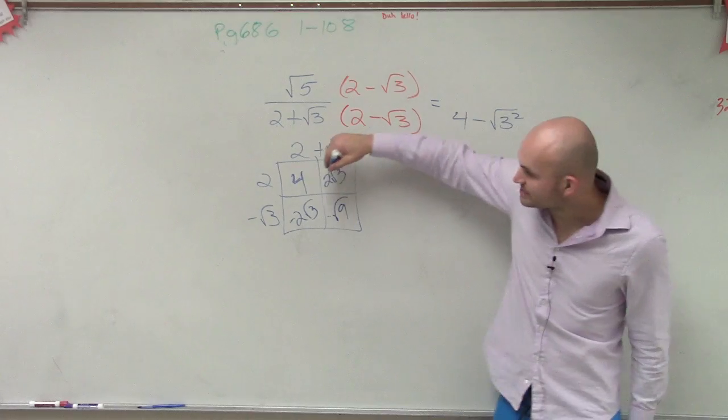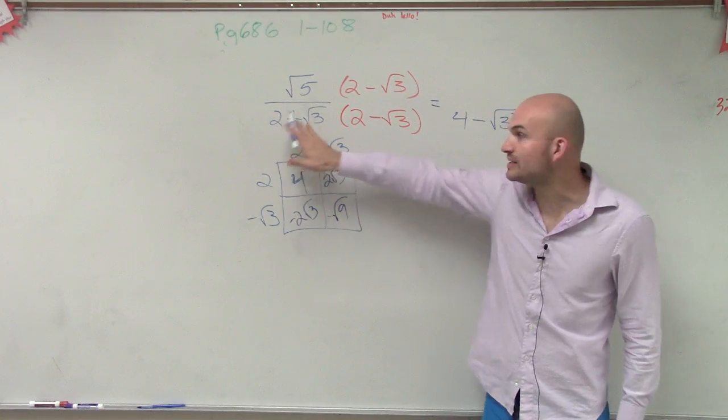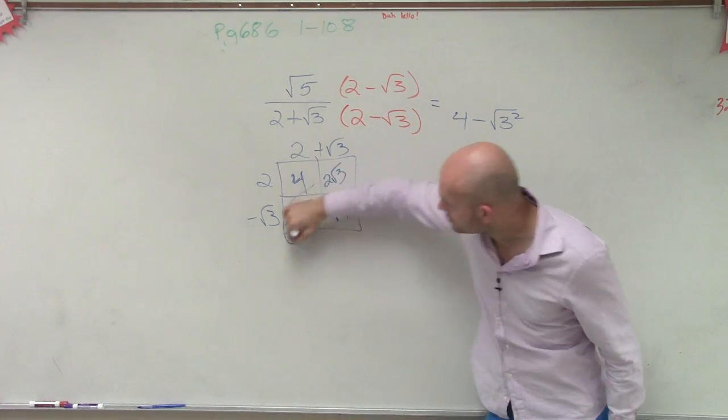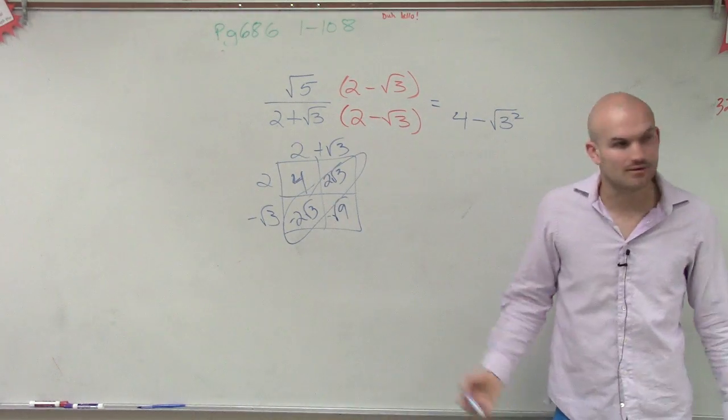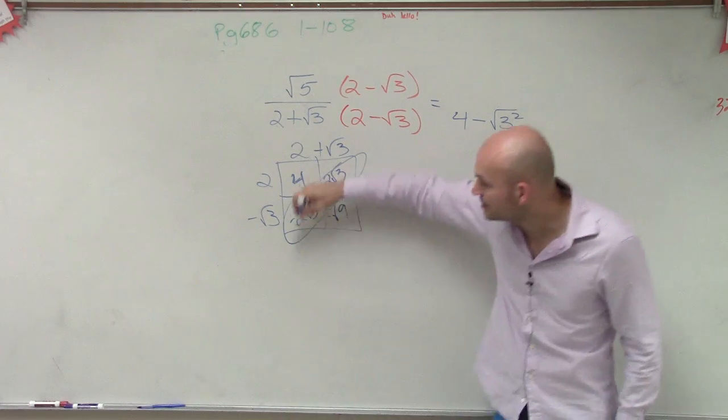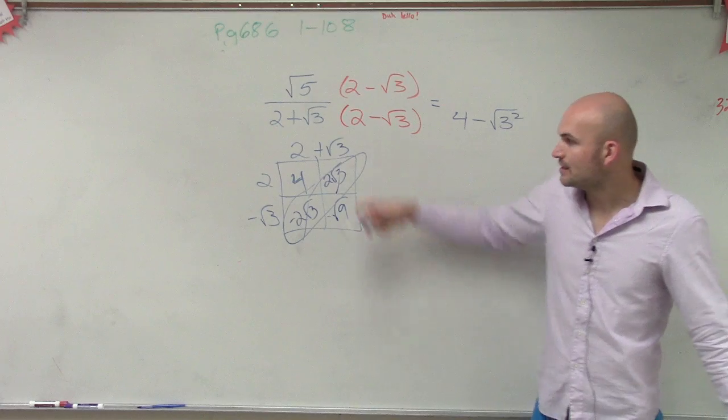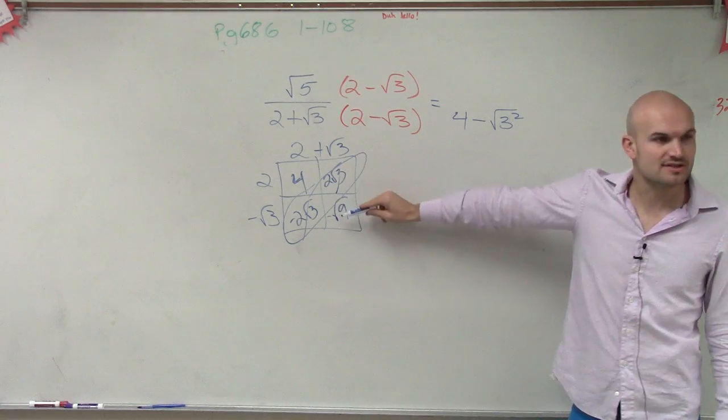All right? So what I'm telling you guys is when you have, the reason why we did 2 minus the square root of 3, because these are difference of two squares. The middle terms cancel out. 2 square root of 3 plus negative 2 square root of 3 add up to 0. Right? So they're no longer there.